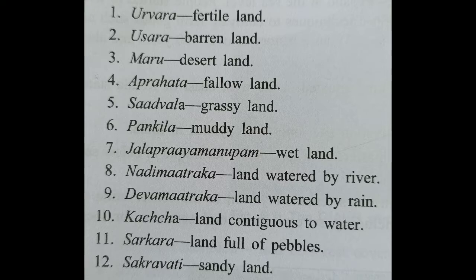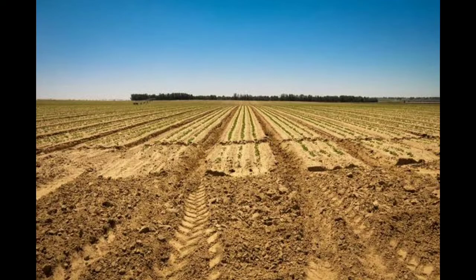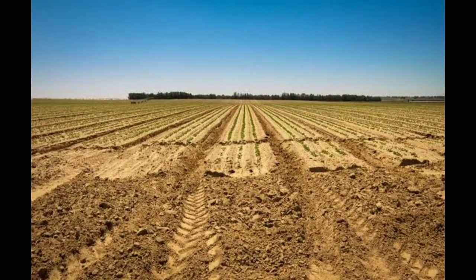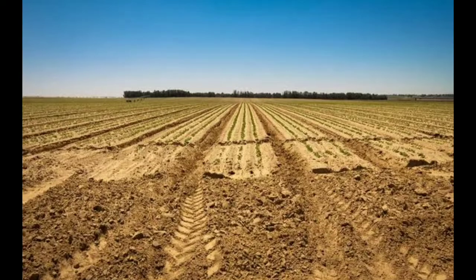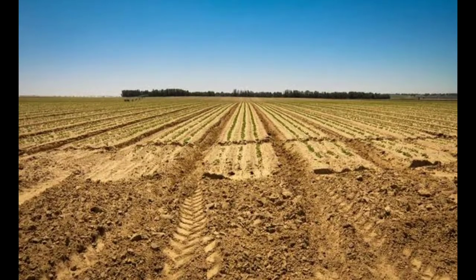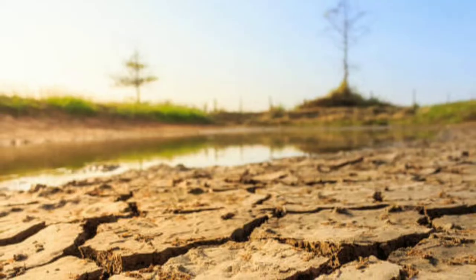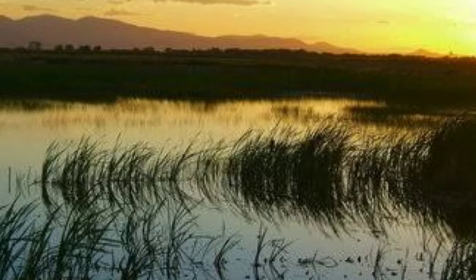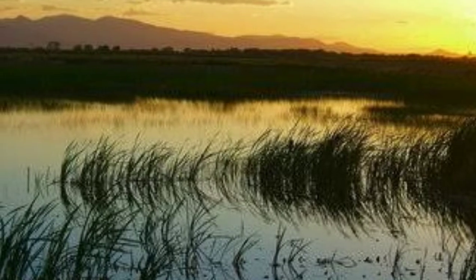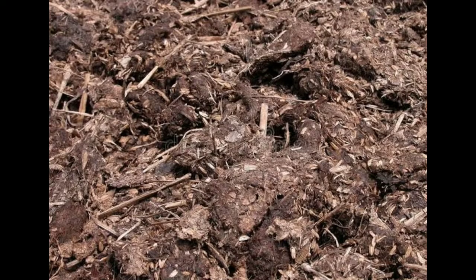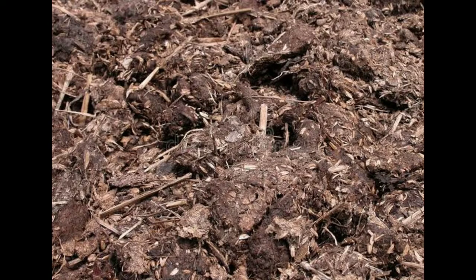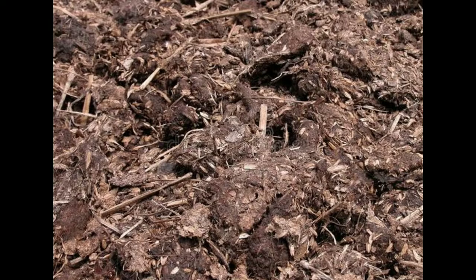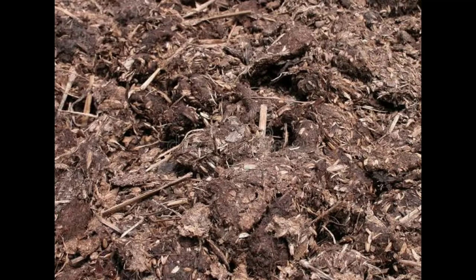Kashyapa classified arable lands — lands capable of being plowed and cultivated — into two categories: dry land, requiring water for cultivation, and wetland, requiring less water for cultivation. The value of manure in cultivation was appreciated in India from the Rig Veda. In addition to bones, fish washings, and animal and vegetable products, the manure used consisted of excreta of animals mixed with litter.